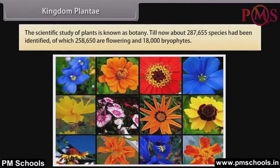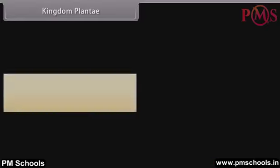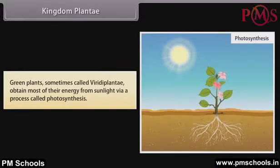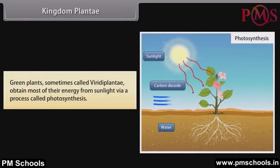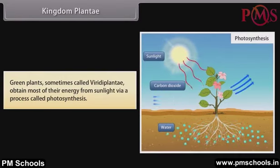Till now, about 2,87,655 species have been identified, of which 2,58,650 are flowering and 18,000 are bryophytes. Green plants, sometimes called Viridae Plantae, obtain most of their energy from sunlight via a process called photosynthesis.